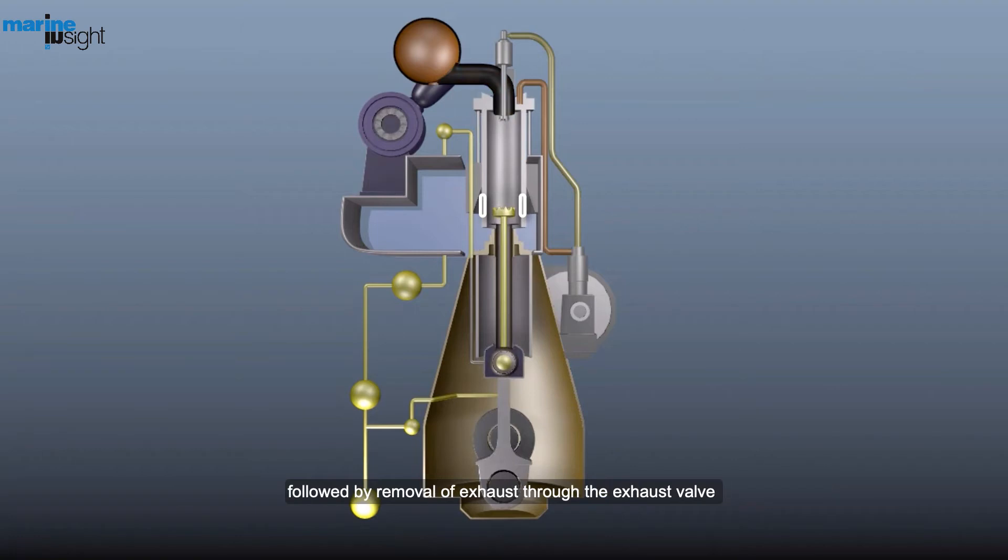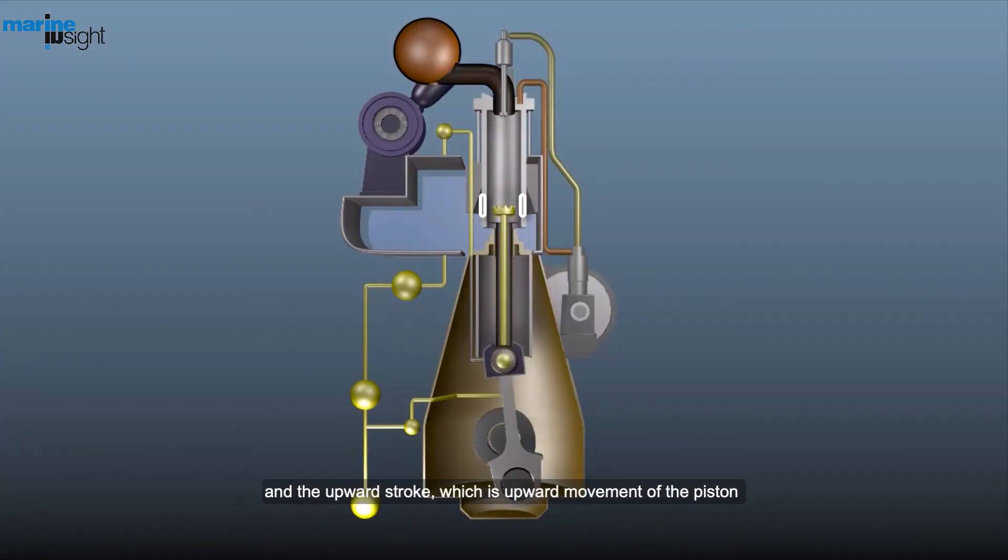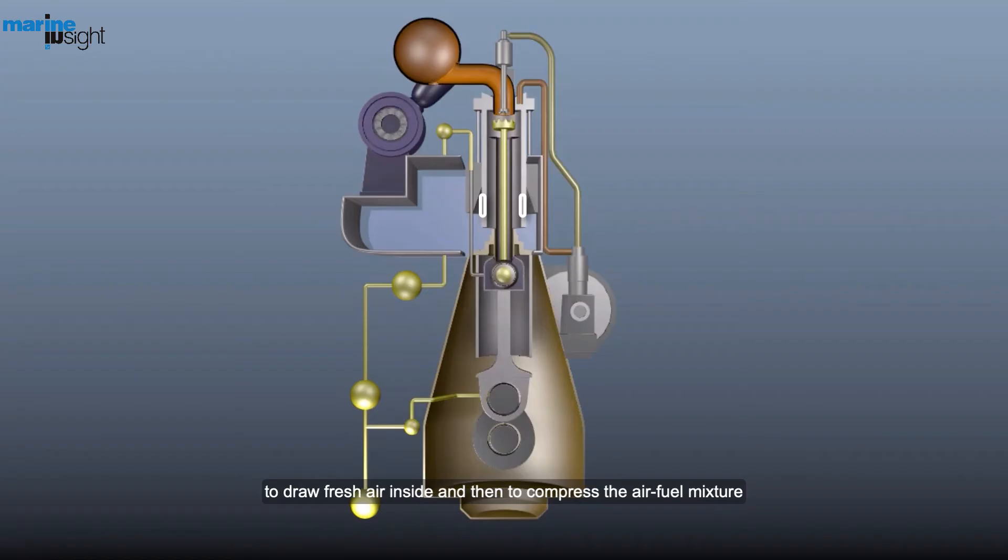This is followed by removal of exhaust through the exhaust valve. And the upward stroke, which is the upward movement of the piston to draw fresh air inside and then to compress the air-fuel mixture.